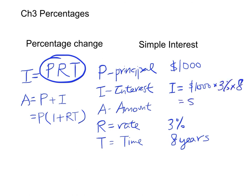And the amount will be P plus I, A will be one thousand dollars plus two hundred forty dollars, which is one thousand two hundred forty dollars.